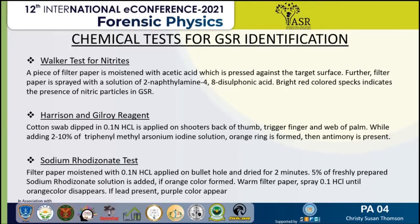Next is the Harrison and Gilroy reagent test. A cotton swab moistened with 0.1 N HCl is applied on the steep back of the thumb, trigger finger, and web of the thumb, because these are the areas where the highest concentration of GSR is found. After that, a tri-oxo-metal arsenic iodine solution is added. If an orange color or orange ring is formed, antimony is present on the suspected area.